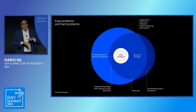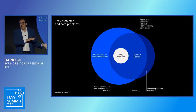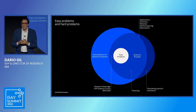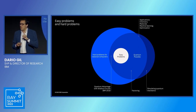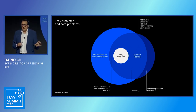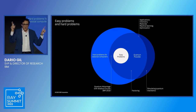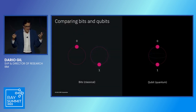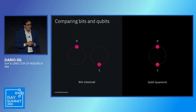Quantum is the only technology we know that alters the equation between what's possible to solve and what was intractable from a classical point of view — meaning the best we could do is approximate the answer. Notice I am not claiming that quantum solves all hard problems. All I'm saying is that there's an important subset of problems where quantum is going to make a difference. So where does that exponential power come from? Let's explore our representation.